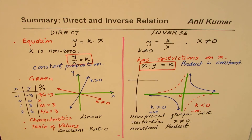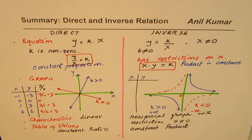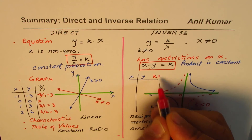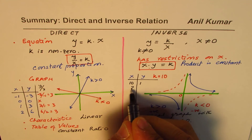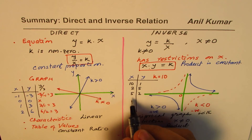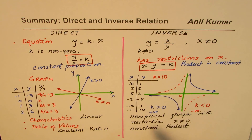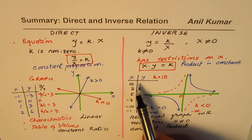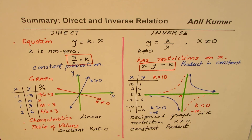For an inverse relation, if we decide the product k equals 10, we can choose values where x times y always equals 10: pairs like (10,1), (2,5), (5,2), (-2,-5), (-1,-10). These are the key properties to understand when working with direct and inverse relations. Thank you and all the best.